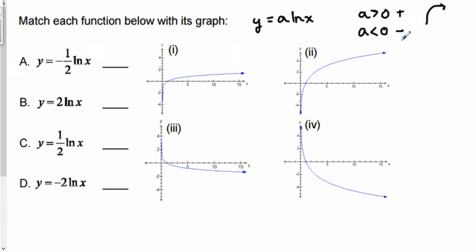If we have a negative a value, then the logarithmic function is going to start in quadrant one and decrease as it moves towards quadrant four. And again, turning the same way, but almost like a reflection of the positive log graph.